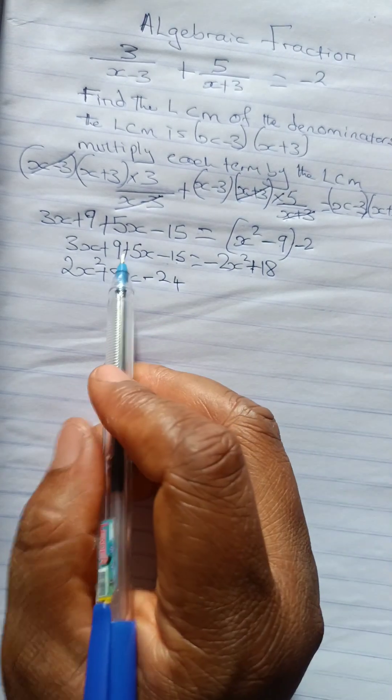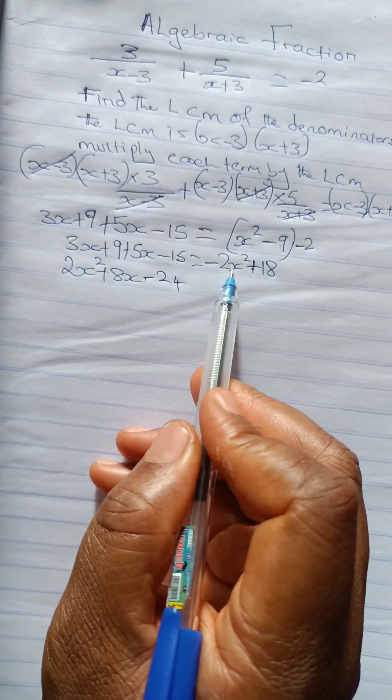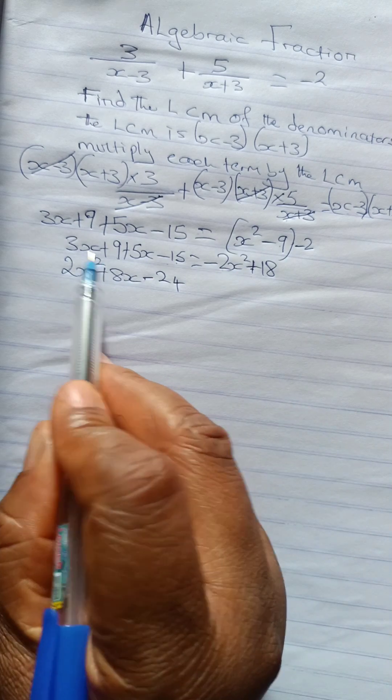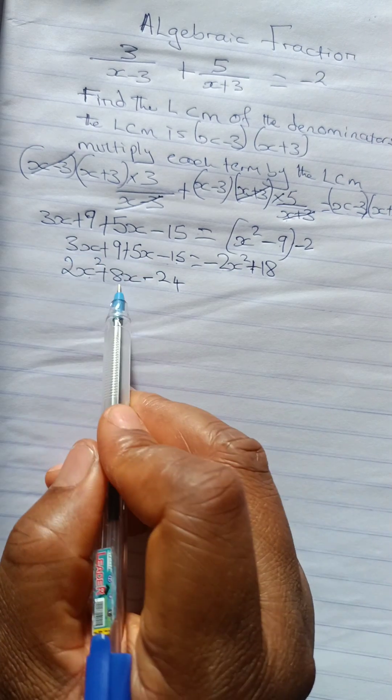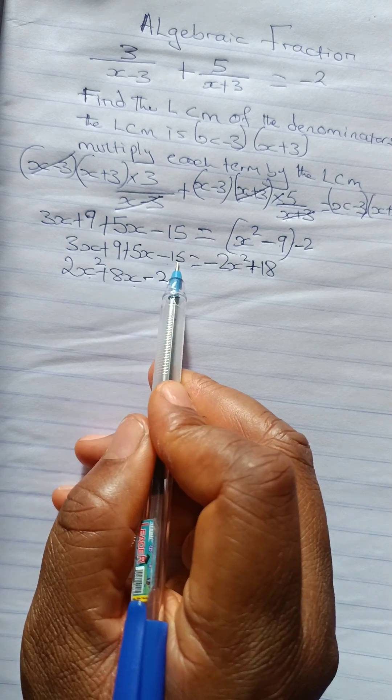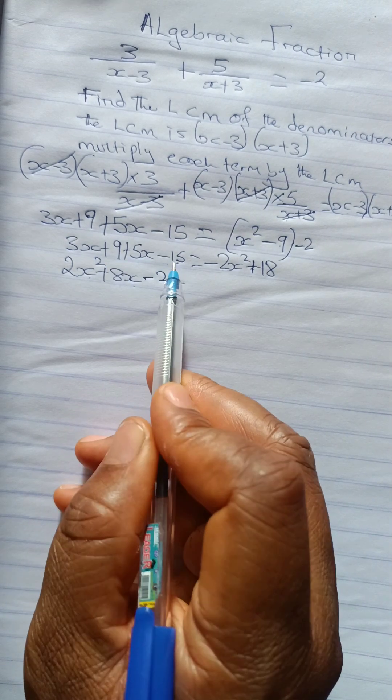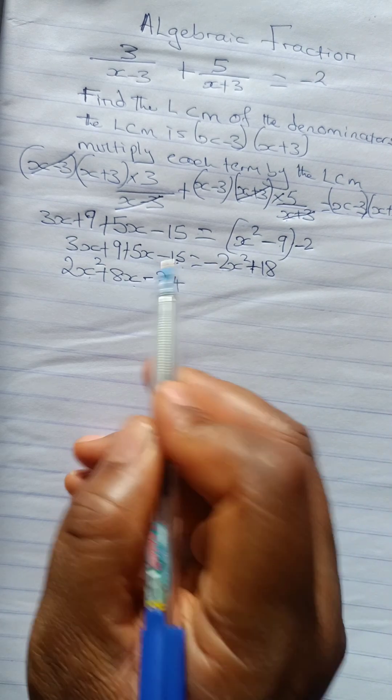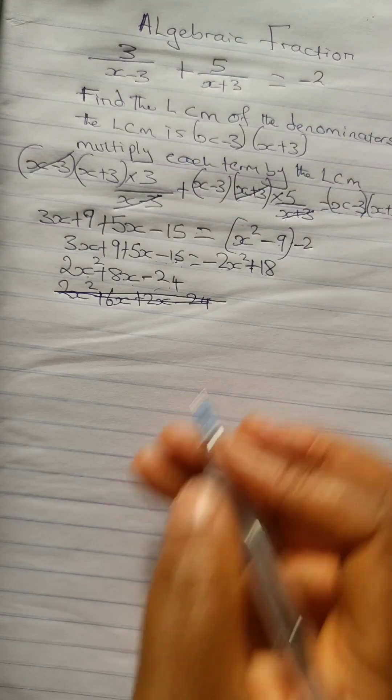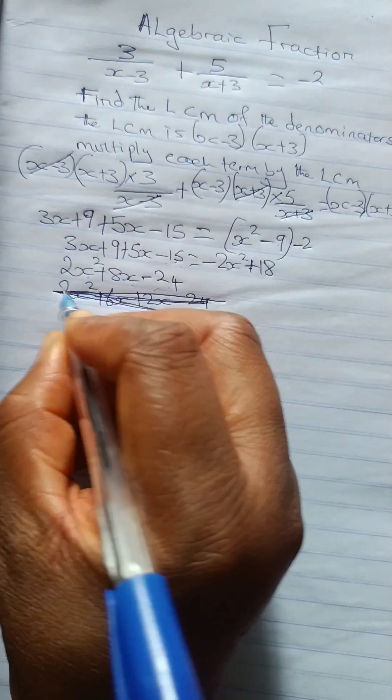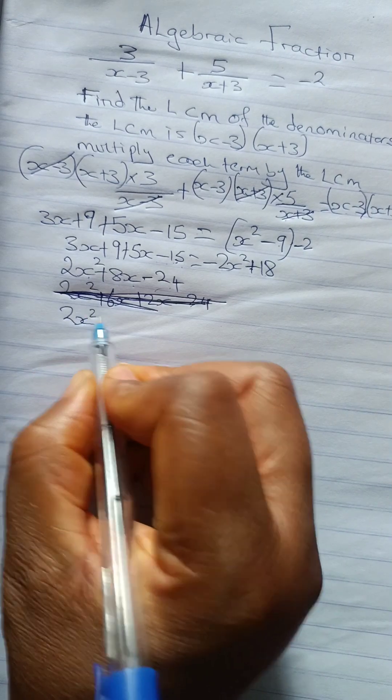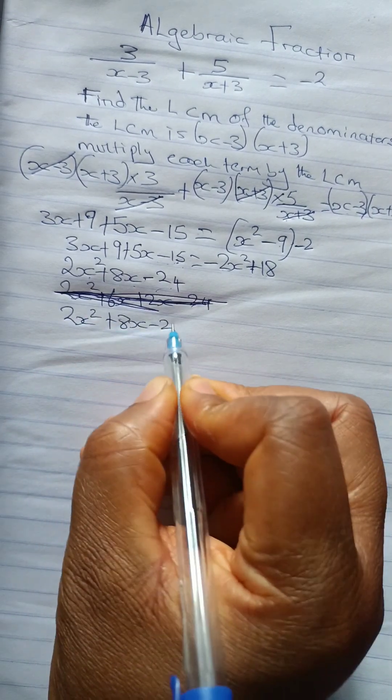I don't know if you understand. I collected the like terms. First, the square, 2x squared. Crossing over became 2x squared. Now 3x plus 5x is 8x. Plus 9 minus 15 is minus 6. Now minus 6, this crossing over becomes minus. So minus 6 minus 18. So we have 2x squared plus 8x minus 24.